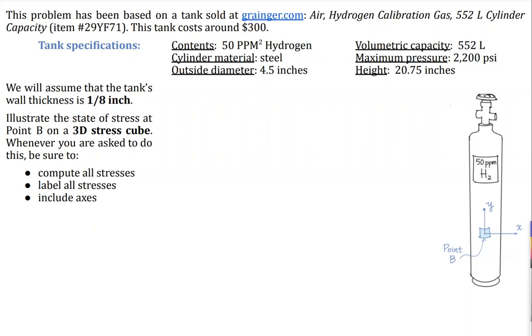Welcome back to my channel. In this video we would like to characterize the state of stress at a point, labeled point B, in this cylindrical pressure vessel. In a prior video we did a spherical pressure vessel. This one is the shape of a cylinder. The problem has been based on a tank in the real world that you can buy for $300 if you're inclined to do so.